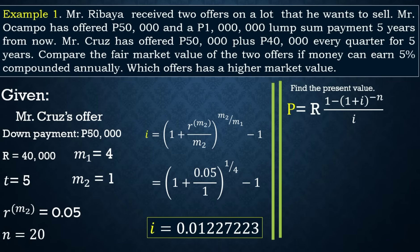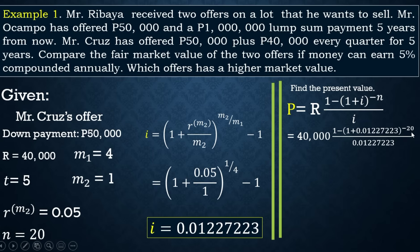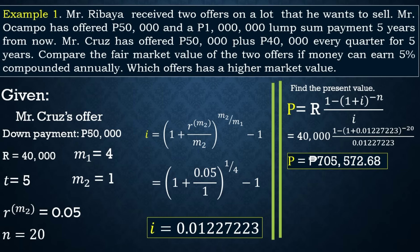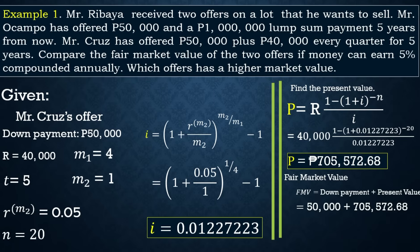The present value of the annuity is computed using the formula: PV = R × [1 − (1 + i)^(−n)] / i. Substituting: PV = 40,000 × [1 − (1 + 0.01227223)^(−20)] / 0.01227223. Using the calculator, the present value is 705,572.68. Therefore, the fair market value for Mr. Cruz's offer is 50,000 + 705,572.68 = 755,572.68.